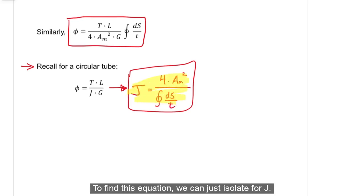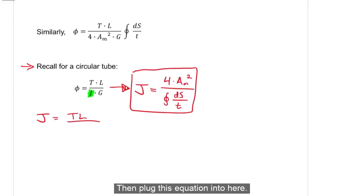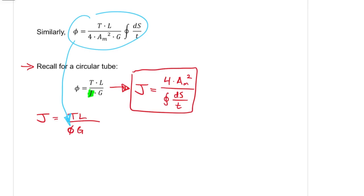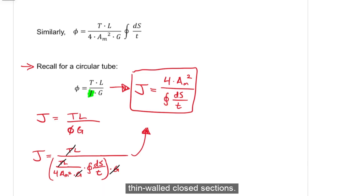To find this equation, we can just isolate for J, then plug this equation into here. Note that this closed integral just means we're integrating over a loop.